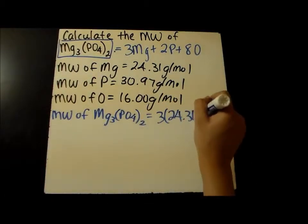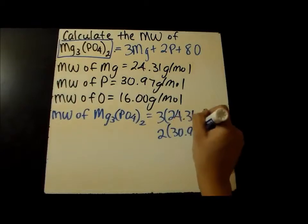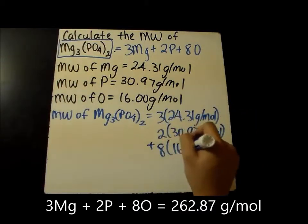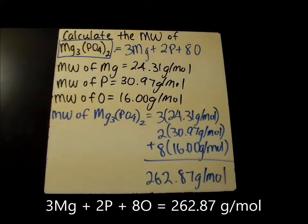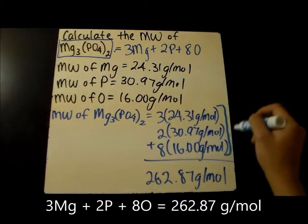To calculate the compound's molecular weight, I'm going to use both multiplication and addition to make the math a bit simpler. So there are three magnesiums, two phosphoruses, and eight oxygens. The total molecular weight of magnesium phosphate is 282.87 grams per mole.